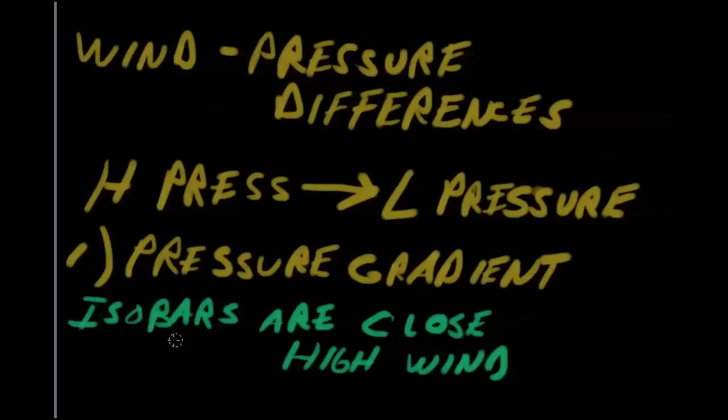So if we got isobars, and now we're going to look at some. But when these isobars running across the map are close together, and if you've done topographic maps, and we're going to do those too, the closer the, on the topographic maps, the closer the terrain features are, the greater the elevation difference on there. And so this would be very, very steep elevation. Well, the closer the isobars, the higher the wind speed.